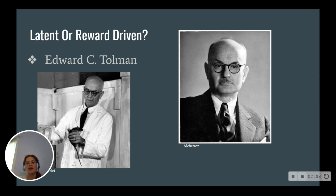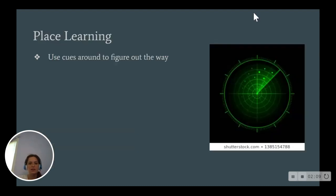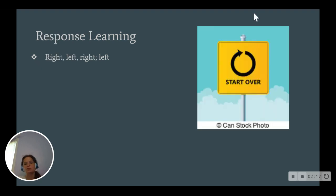But what he wanted to do next was discover the method, the learning strategies the rats are using. And with this, he had two theories. Place learning: the rats are using cues around the maze to figure out the way. Maybe they see a door and they know to go left or right. The other was response learning. The rats are simply going around using trial and error, and they're building a sequence of directions like left, right, right, left, that results in the end of the maze.